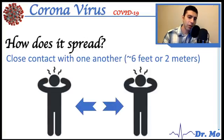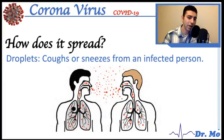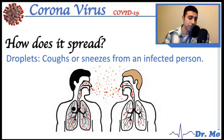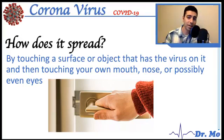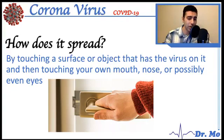How does COVID-19 spread? Close contact is the main route — within about six feet or two meters. It spreads mainly through respiratory droplets when an infected person coughs or sneezes. It can also spread by touching a surface or object that has the virus on it and then touching your mouth, nose, or even your eyes — though eye transmission is less common.